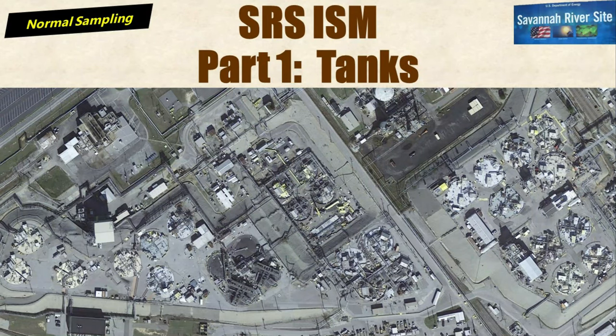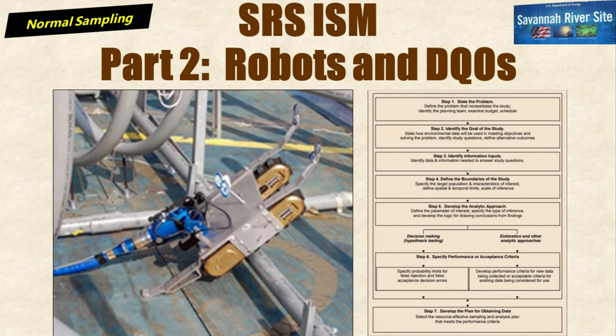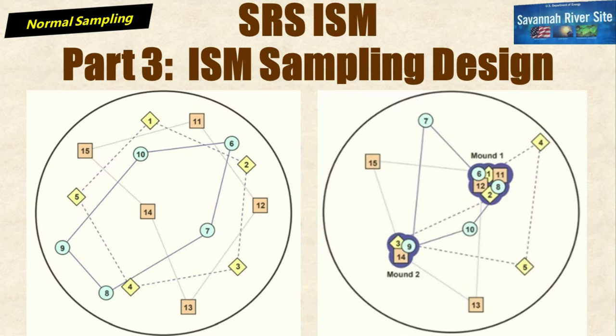If you've ever wondered if ISM is applicable to high-level nuclear waste, the answer is a resounding yes. The breadth and complexity of this project necessitate a three-part approach. Part one covers the SRS liquid waste tank closure challenges, part two covers robotics and data quality objectives, and part three covers the ISM sampling design. Watching all three videos provides a better comprehension of the complex integration and problem solving necessary to achieving success.